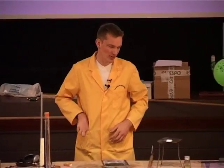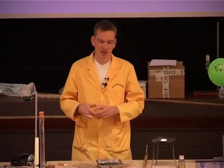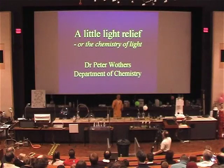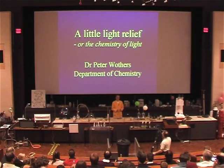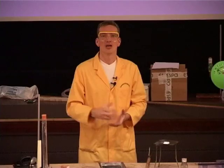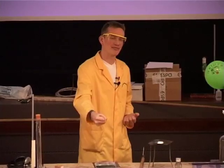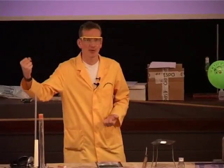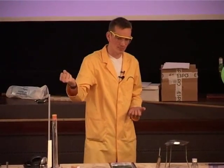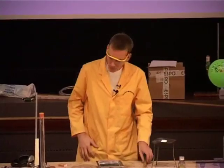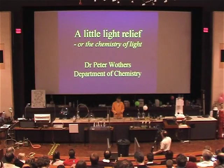We're going to start off with some chemical light. Now, presumably the first artificial light that must ever have been formed must have been as man made fire. As soon as he'd made fire, he could lift up a branch and light his way. This is, of course, just the combustion of the wood.